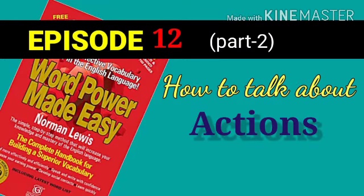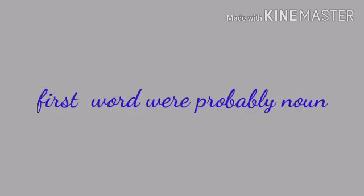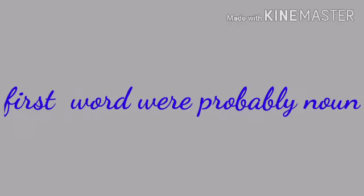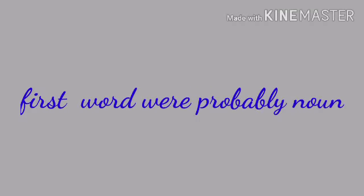As a young child, you used the verb fairly early. Your first words were probably nouns as you identified the things or people around you — Mama, Dada, Doll, Baby. Naming concrete things or real persons is the initial step in the development of language.